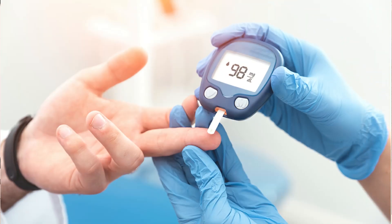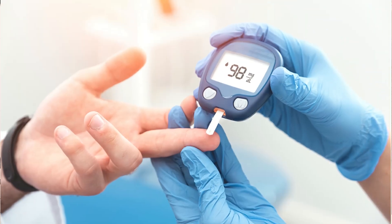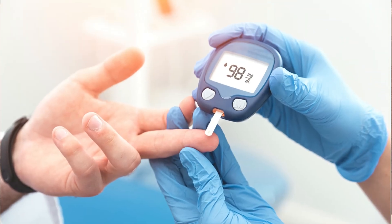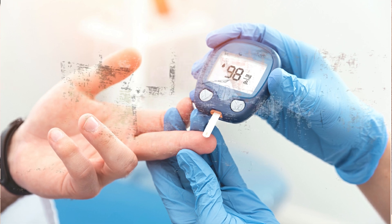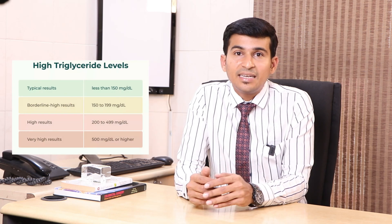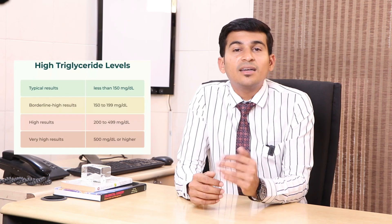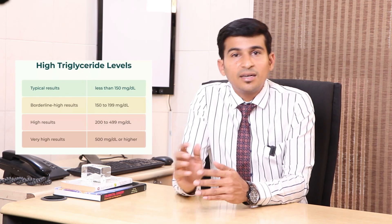Central obesity is very dangerous. All diabetic patients, where sugar is very high, are at risk. The third factor is cholesterol — especially high triglyceride levels. If anyone has elevated triglycerides, they will develop fatty liver.